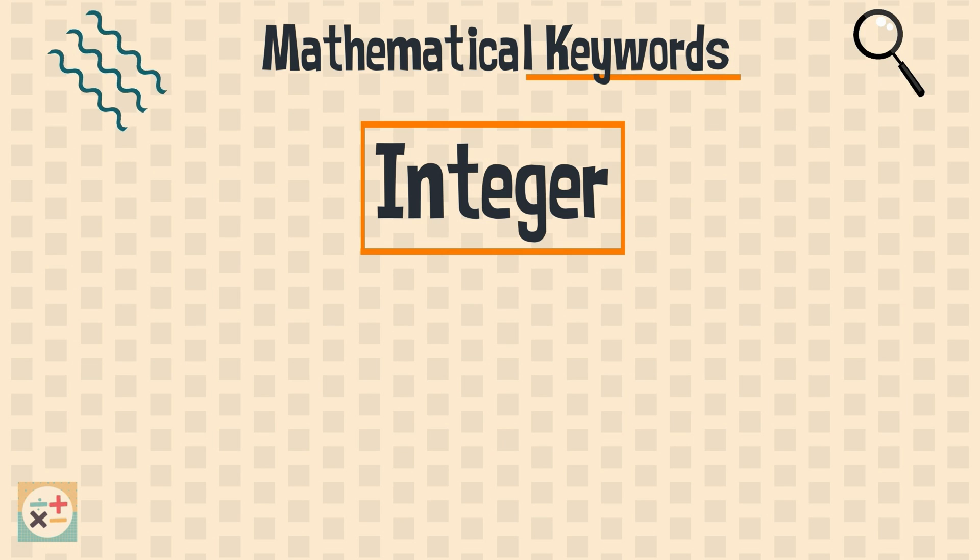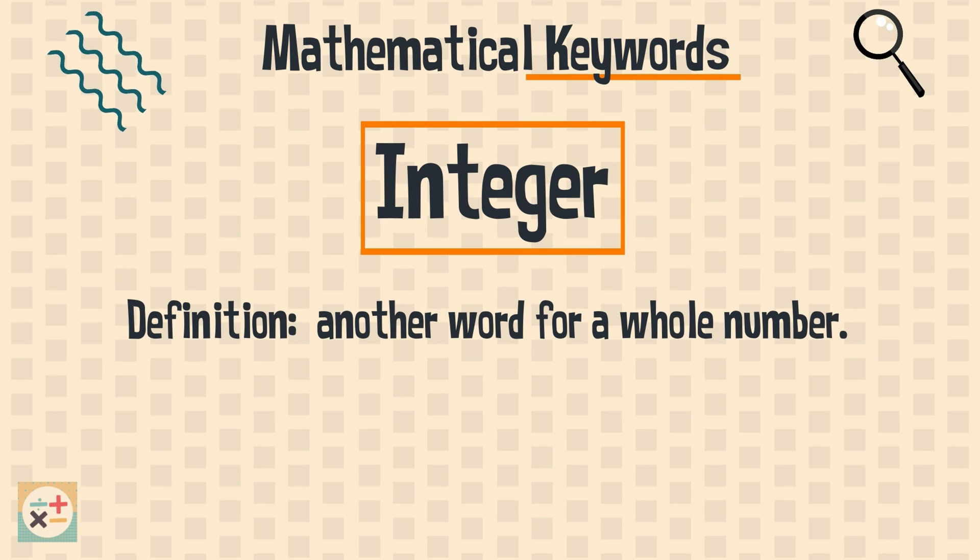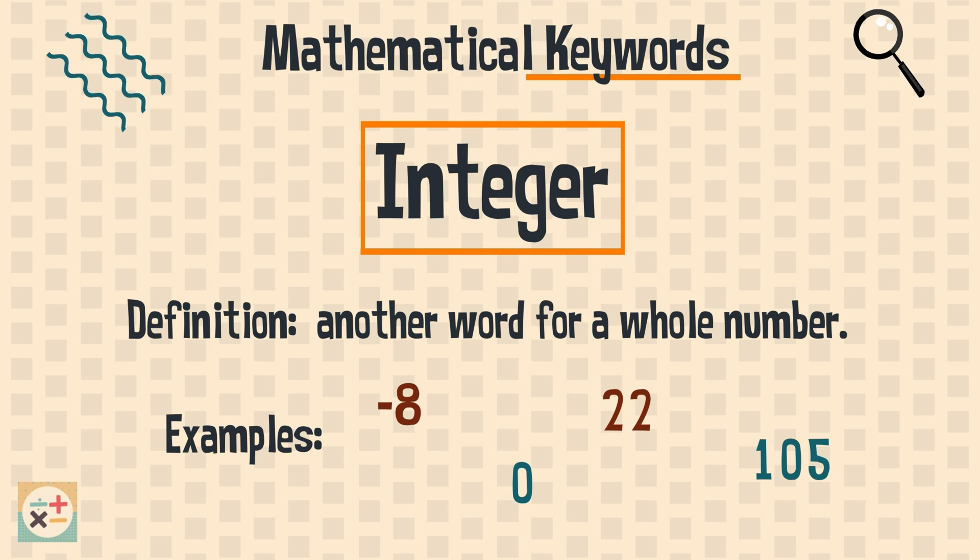Integer. This is another word for a whole number. A number with no fractional parts. Integers can be positive or negative numbers, including 0. For example, the number minus 8 is an integer.